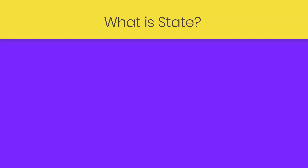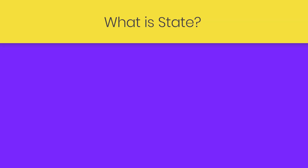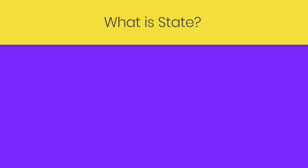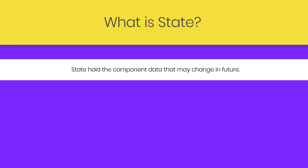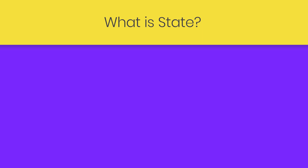In this lecture, we are going to talk about what is State in React. State is one of the most important concepts in a React application. State is an instance of the React class and it is used to control the behavior of the component. State holds the component data that may change the component behavior. State is nothing but a simple plain JavaScript object. To understand how state is useful in React and how you can use it in your component, let's take a look at a very simple example of State.